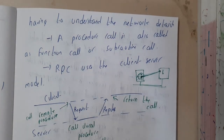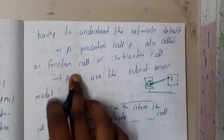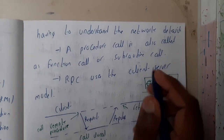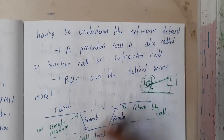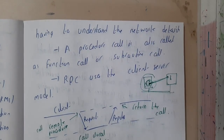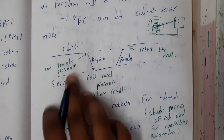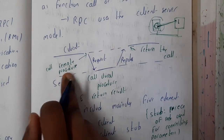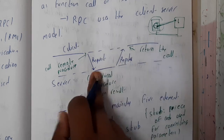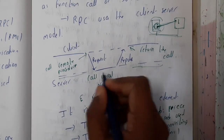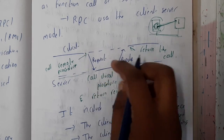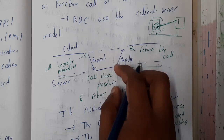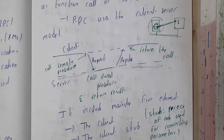This concept of calling a function on a remote system is nothing but a remote procedure call. A procedure call is also called a function call. RPC uses the client-server model — one side is the client and the other is the server. In the flow diagram: the client calls the procedure, the server is in idle state, the request is accepted, the local procedure executes, and the result is replied back.